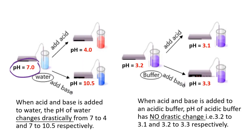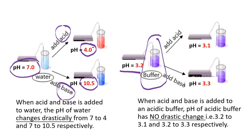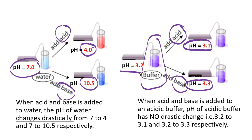When water, which has an initial pH of 7, is added with some acid and base, we would see that the pH of water would change drastically from 7 to 4.0 or 7 to 10.5. Whereas when a buffer solution, which has an initial pH of 3.2, has a small amount of acid added, the pH of the buffer only changes slightly to 3.1, or when a little bit of base is added, the pH of the buffer would increase slightly to 3.3. Now, how does this happen?